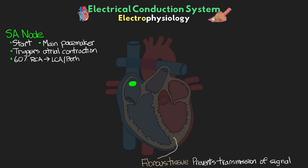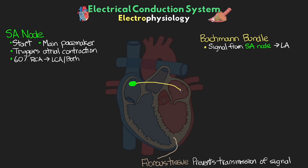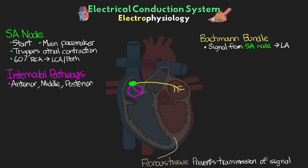Next, we have something called Bachmann's bundle. This is a specialized tract of cells responsible for carrying the signal from the SA node to the left atrium to ensure they're contracting together. It consists of high-speed transmission cells that travel from the SA node across the atrial septal wall to the left atrium. Next, we have our internodal pathways — three of them, referred to as the anterior, middle, and posterior — and these are primarily responsible for taking the signal from the SA node and passing it along to the AV node.